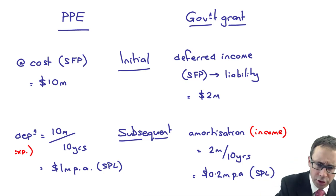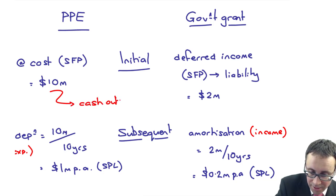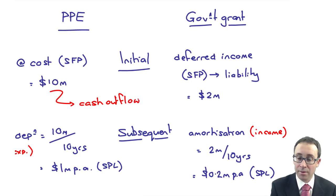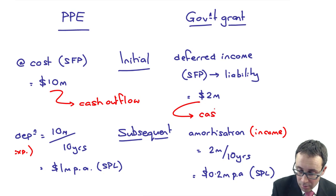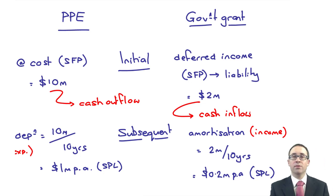You know, there's nothing to stop you there to get additional marks. Initially, 10 million, that's a cash outflow. Purchase a PPE within your statement of cash flows. And then this 2 million here is a cash inflow. So receipt of government grant within your investing activity. So always be prepared just to throw in a sentence about the statement of cash flow if it is relevant.